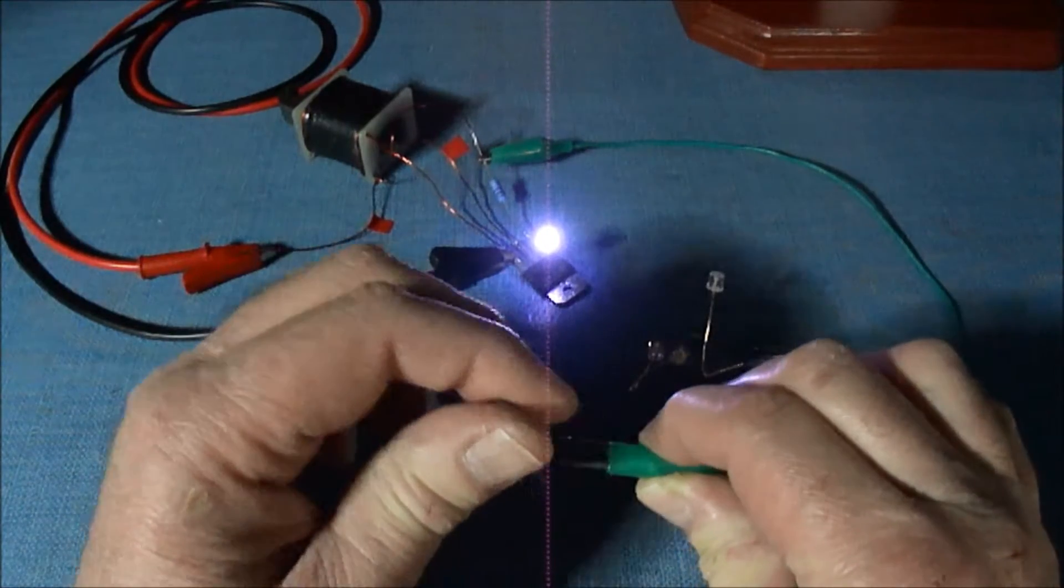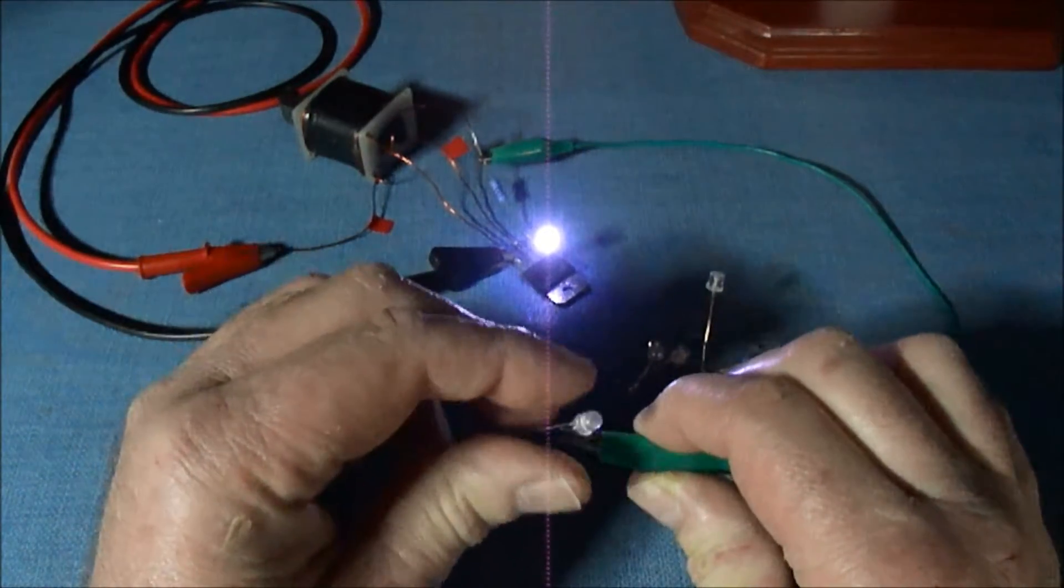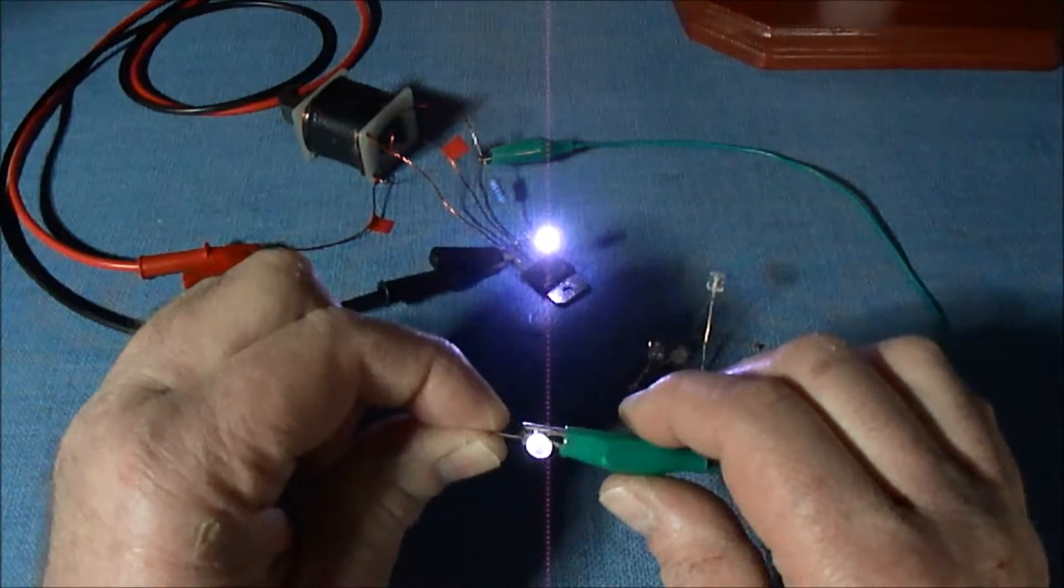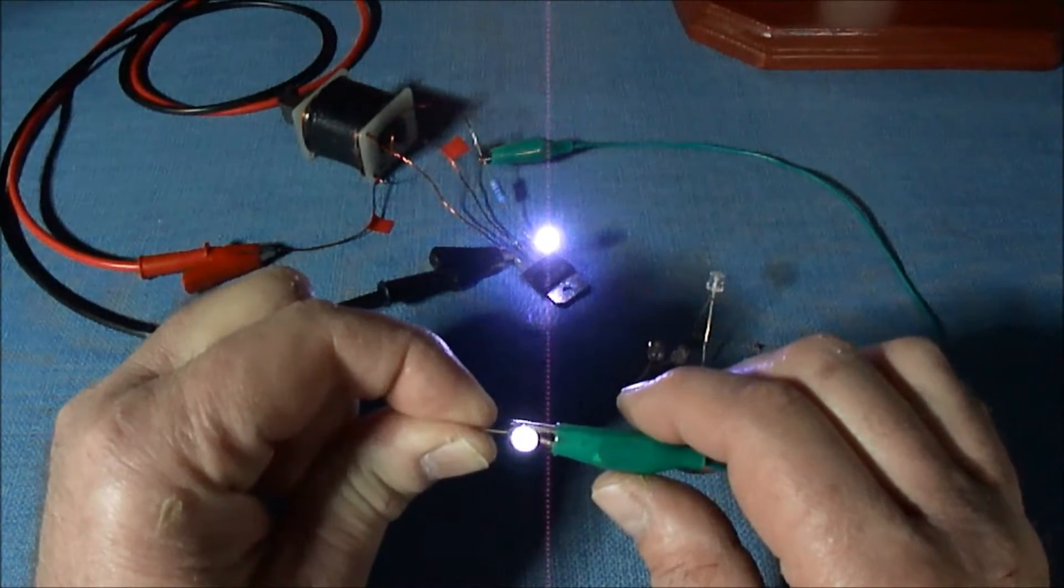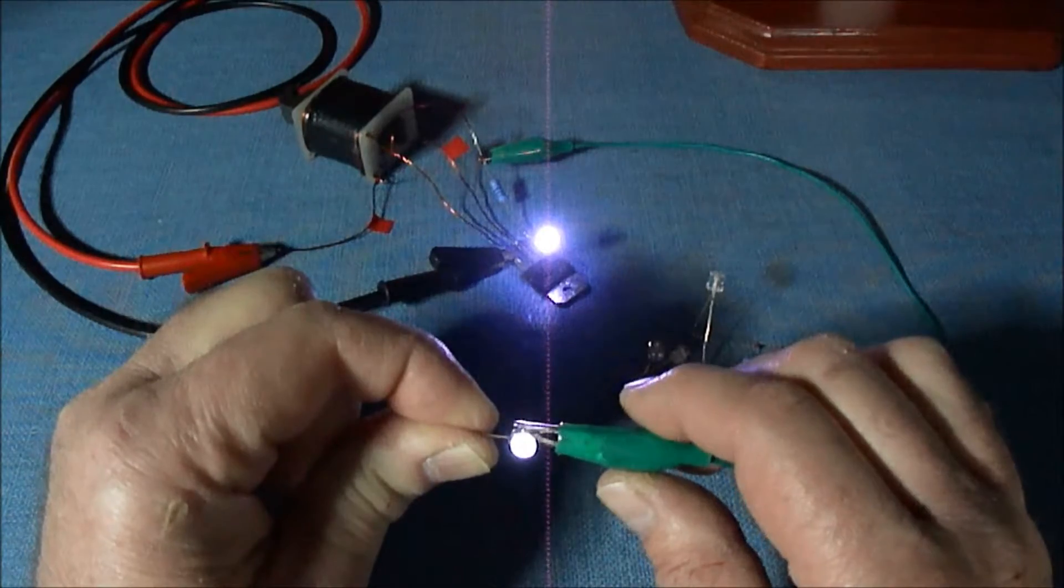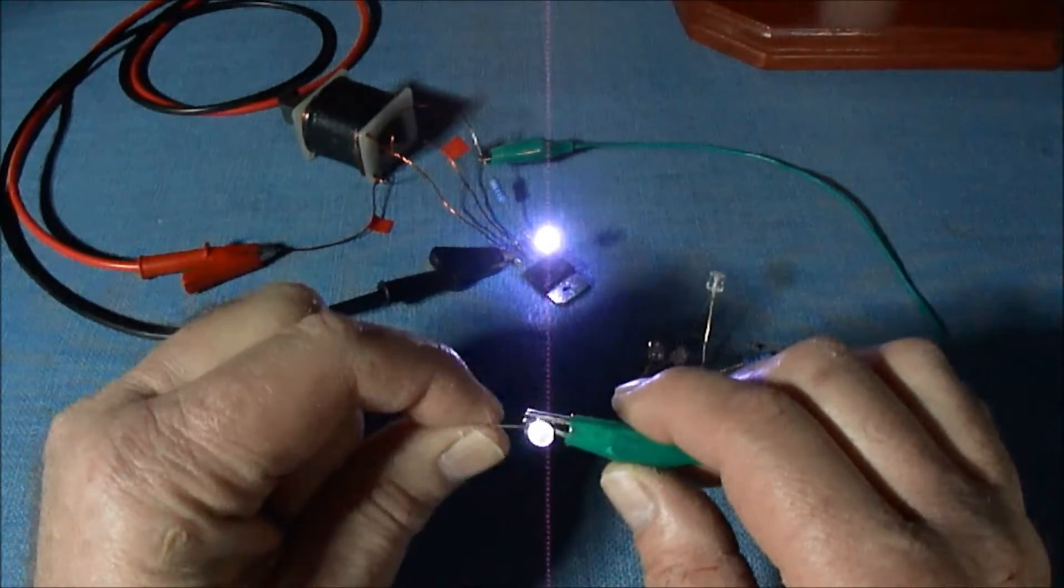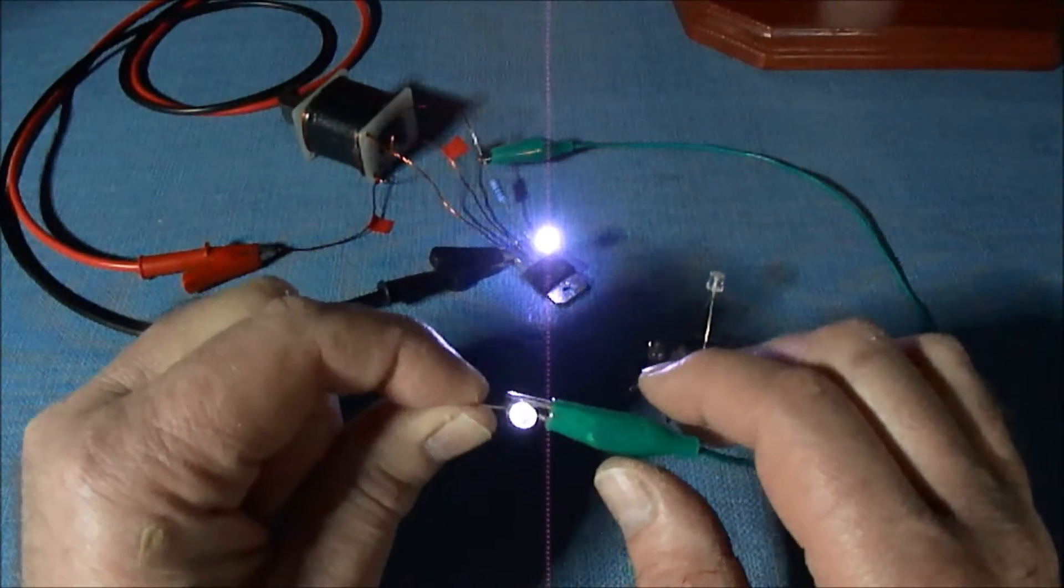What I think is happening is the LED becomes a spark gap and also a Zener diode at high frequencies. One of the things the pioneers in electricity learned was that high frequency and high voltage can pass through any dielectric.